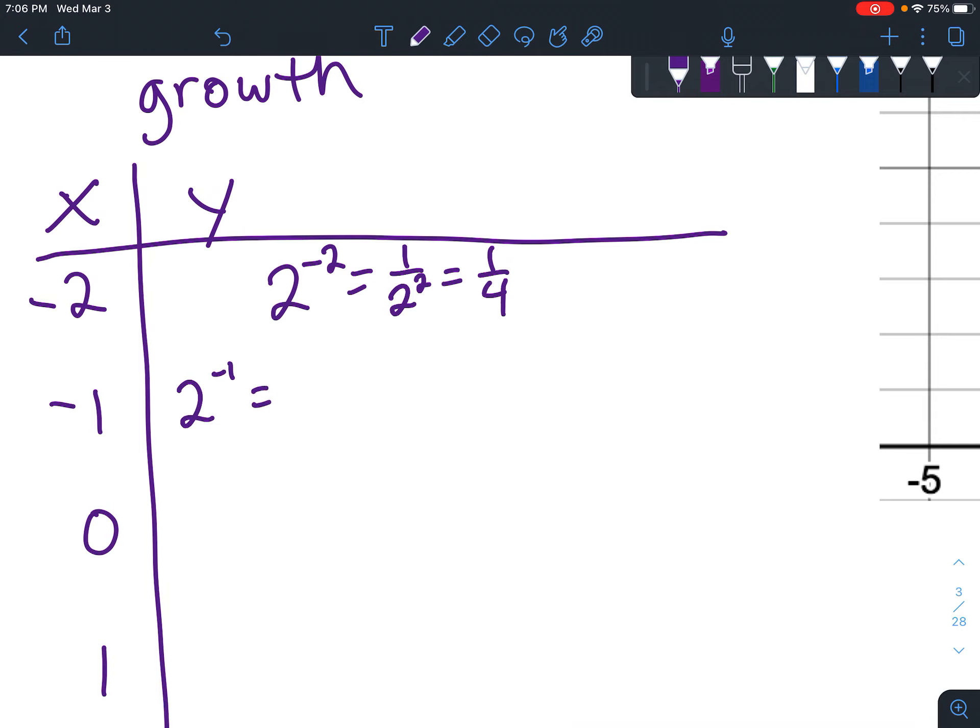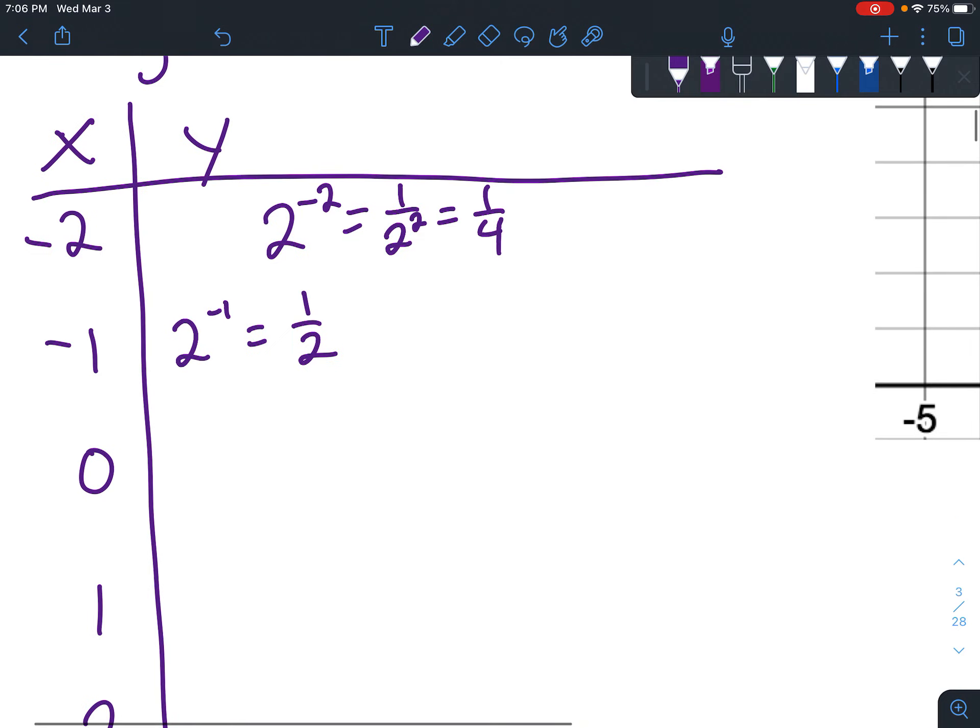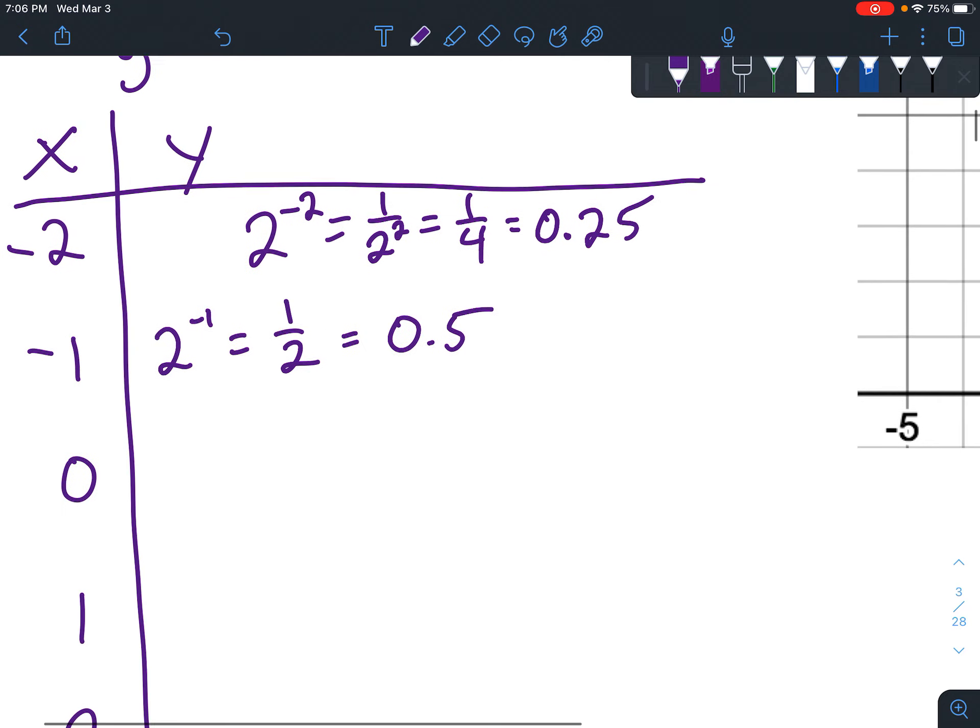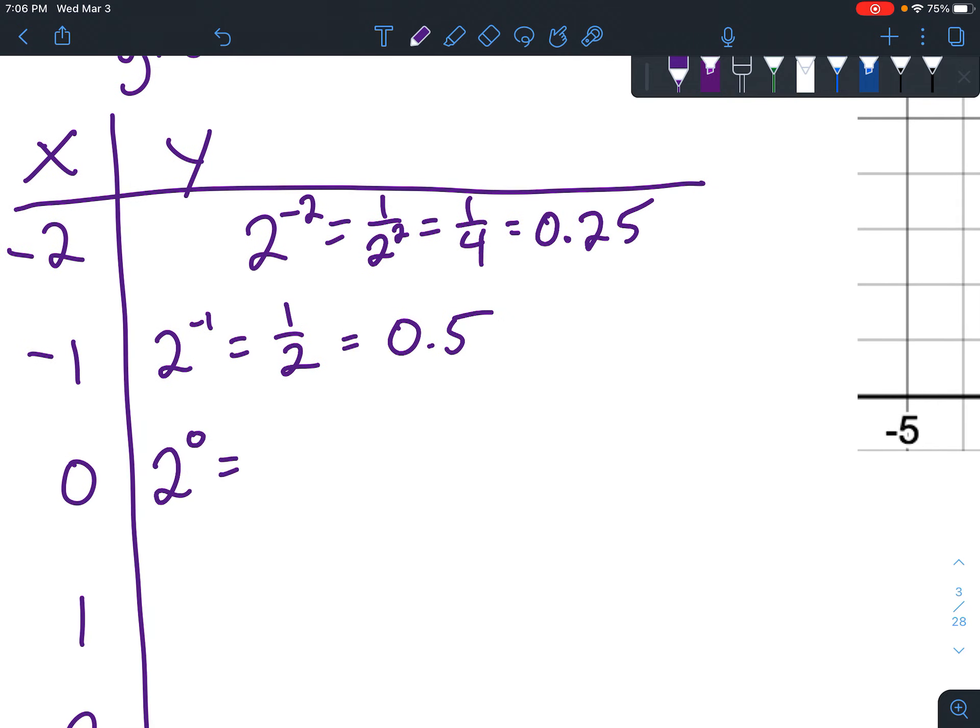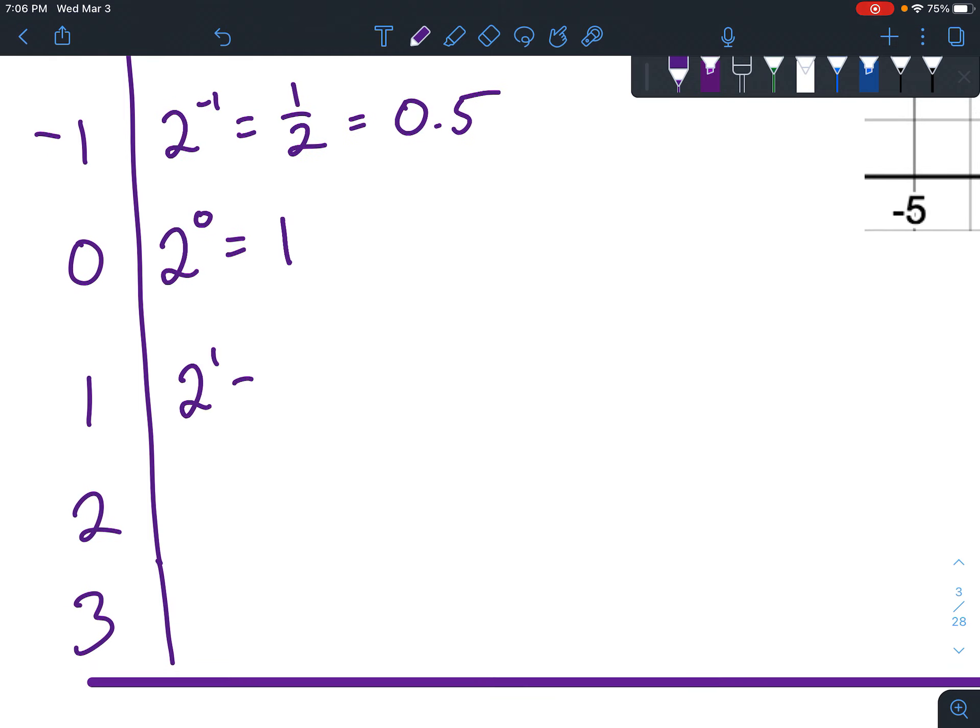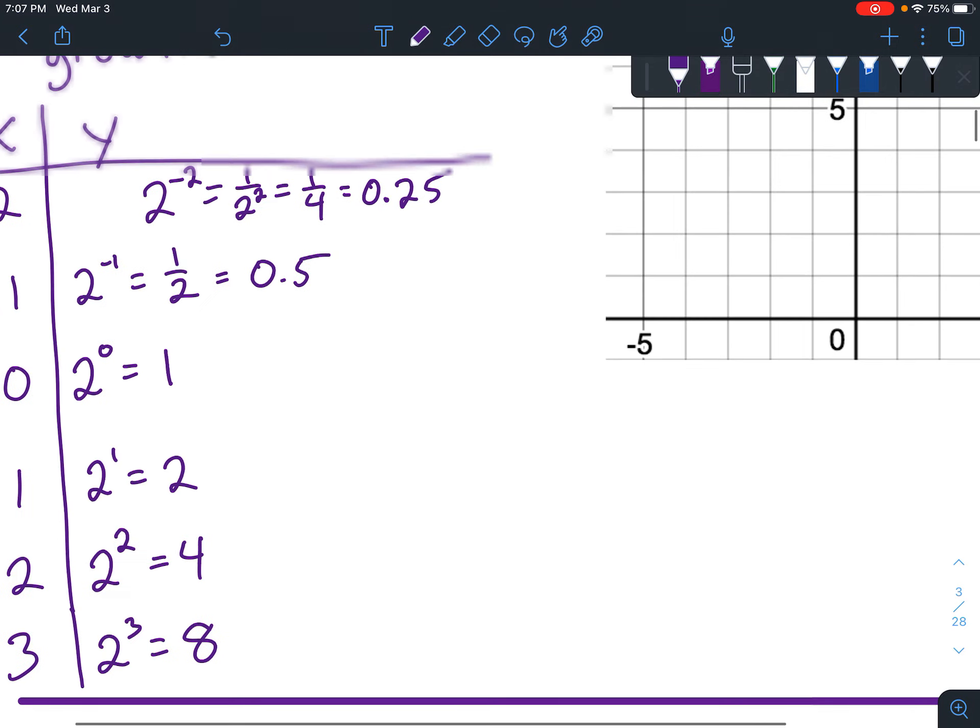And then I guess we don't need to write y equals. And then 2 to the x again. So now we have 2 to the negative 1 equals 1 over 2, which equals, well, 1 half is 1 half. And then if you want to change it to a decimal, sometimes that's nice for graphing. That would be the same as 0.25, and that would be the same as 0.5. Okay, and then 2 to the 0 always equals 1, if you have it raised to the 0 power. And 2 to the first equals 2. 2 squared equals 4. And then 2 to the third equals 8.